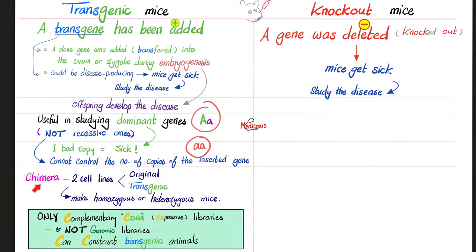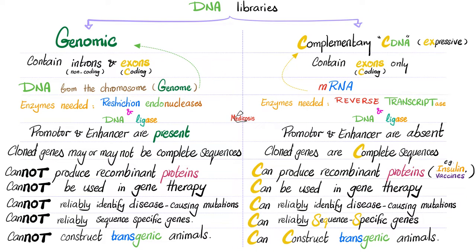We can also make Chimeras — organisms made of two or more cell lines, like patches. For example, one cell line could be the original and the other transgenic, and then we can make homozygous or heterozygous mice and study them. Please remember, which DNA library can be used to construct transgenic mice? Only the complementary or cDNA libraries — not the genomic, because the genomic has introns.